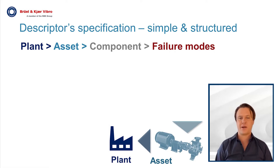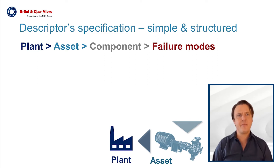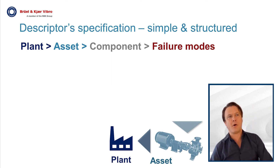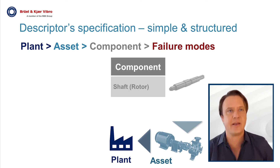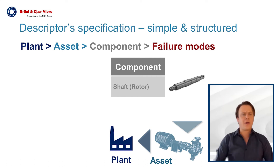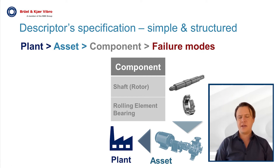So you have different asset types within your plants — such as pumps, gearboxes, fans — they are built from individual components such as shafts, couplings, or rolling element bearings, and each asset